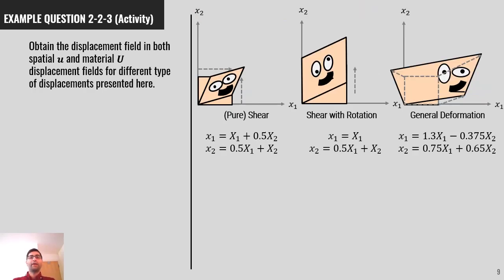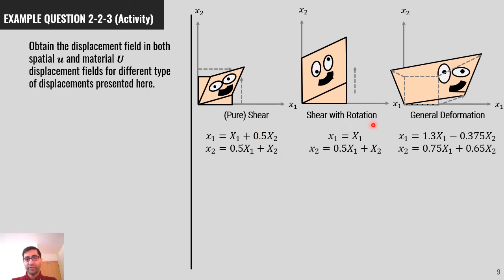Here is a final example for you to work on before starting the third part of this lecture. It is similar to the first example. For different displacement fields presented — pure shear, shear with rotation, and general deformation — find the spatial U and material capital U deformation fields. Good luck with it.